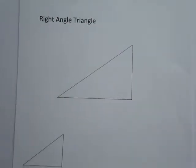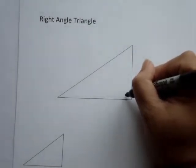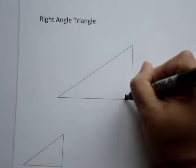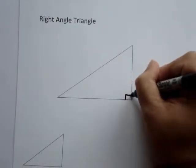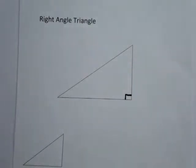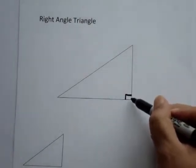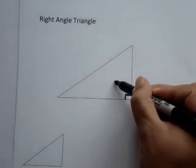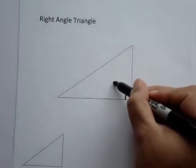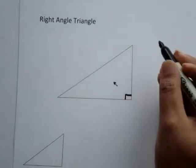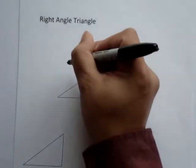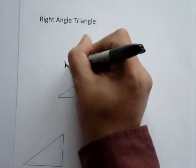Here we have a right angle triangle, and we signify the right angle which is 90 degrees by making a little square. If we follow the corner of the right angle directly across, this side of the triangle has a special name and it's called the hypotenuse.